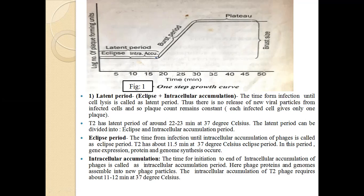The second sub-period within the latent period is the intracellular accumulation period — the time from initiation to the end of intracellular accumulation of phage. During this period, phage proteins and genome assemble into new phage particles. The intracellular accumulation period of T2 phage requires about 10 to 12 minutes at 37°C.